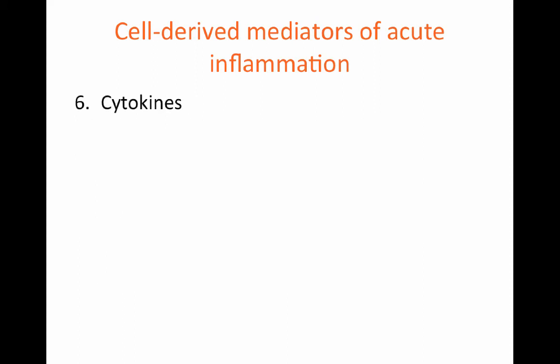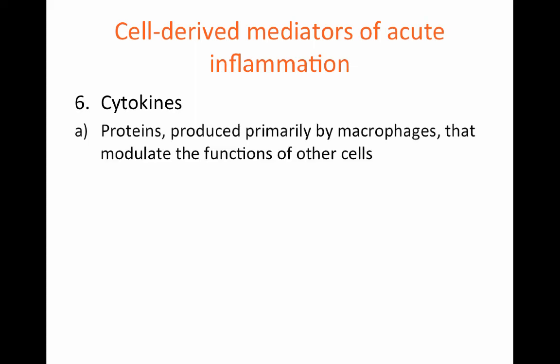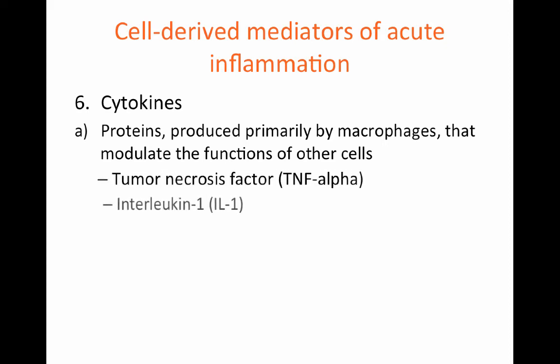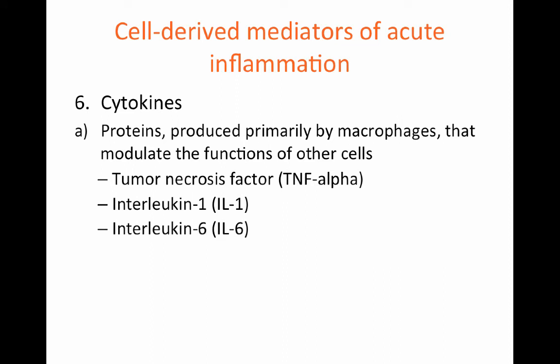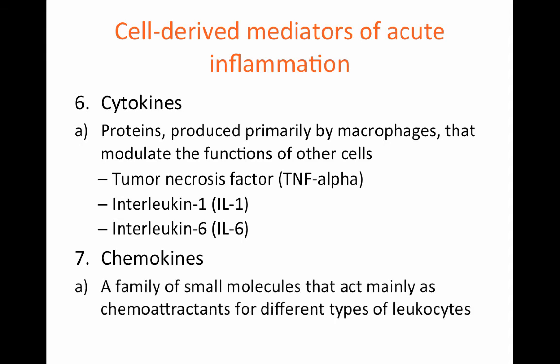Cytokines are also cell-derived mediators of acute inflammation. These are proteins produced primarily by macrophages that modulate the functions of other cells. Some examples include tumor necrosis factor alpha, interleukin-1, and interleukin-6. Chemokines are also cell-derived mediators of inflammation — a family of small molecules that act mainly as chemoattractants for different types of leukocytes. An example previously discussed is interleukin-8, or CXCL8, which is a chemoattractant for neutrophils.